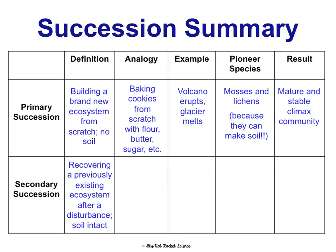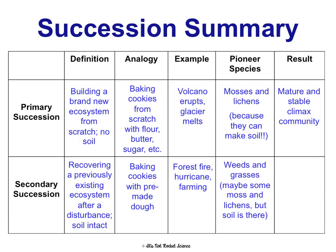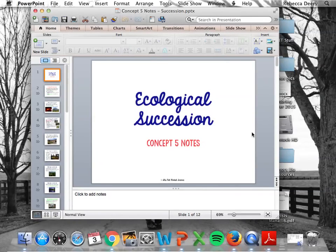Secondary succession is recovering a previously existing ecosystem after disturbance — soil is there. This would be like buying pre-made dough, like break-and-bake cookies — you already have all the goods and you're just going to take it to the next level. A real-world example is a forest fire, hurricane, or farming. The first species will be weeds and grasses, although maybe some moss and lichens, but soil is there. The result is still going to be a mature and stable climax community. And that is ecological succession.